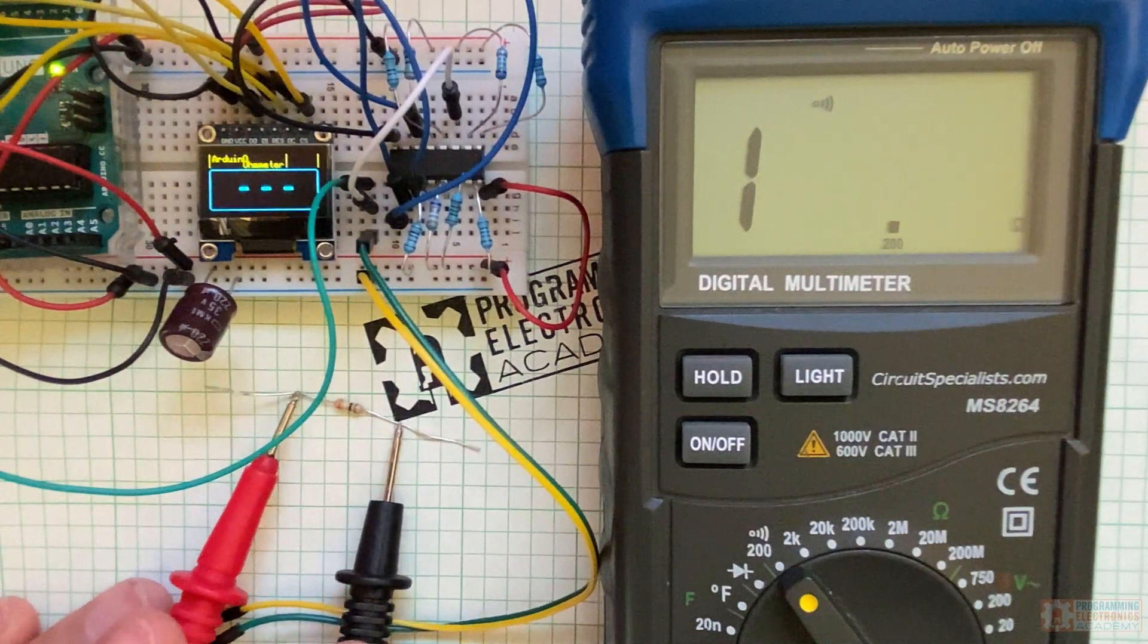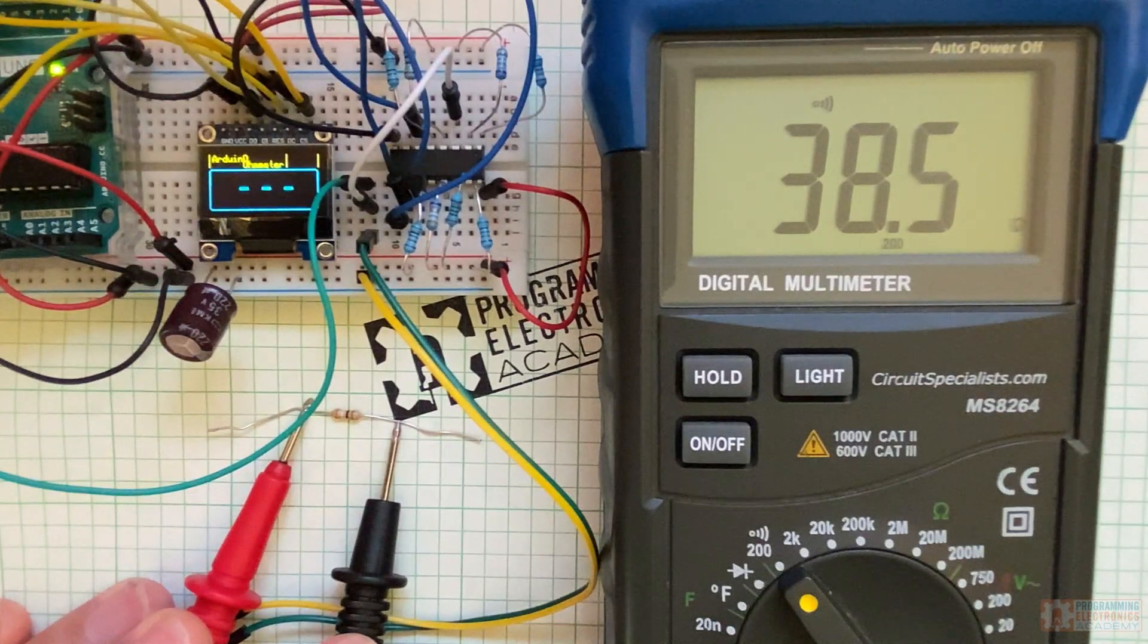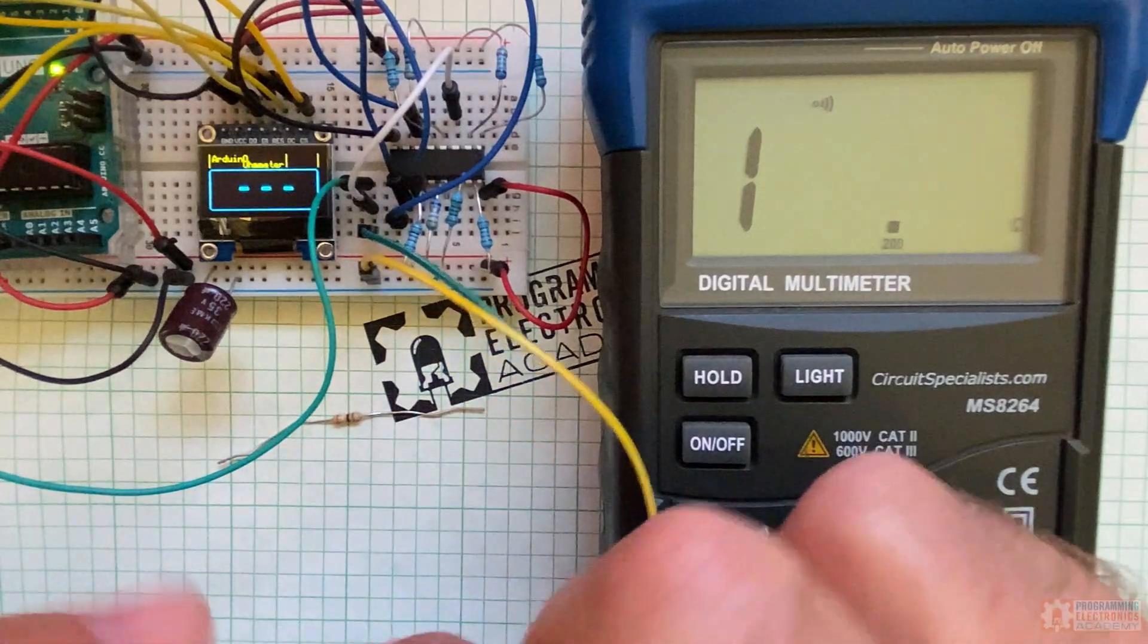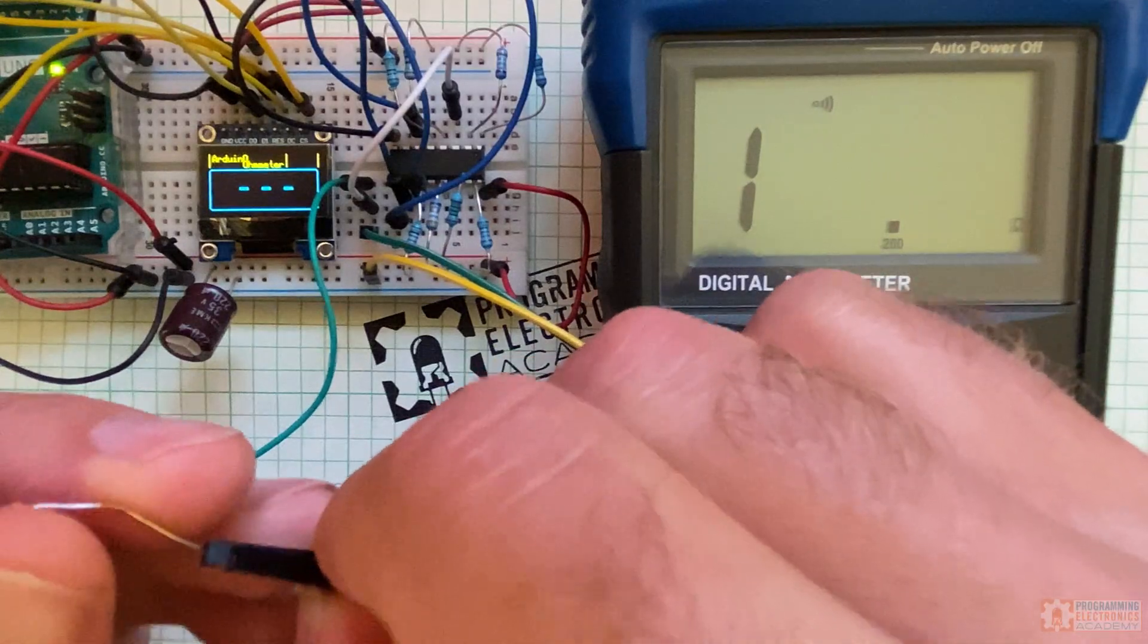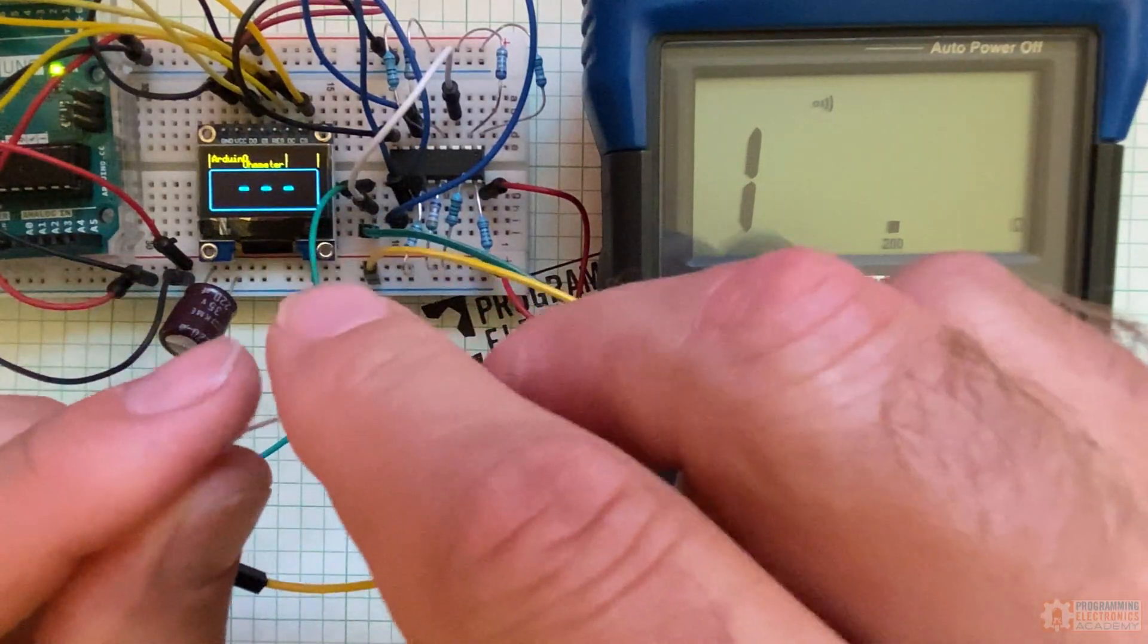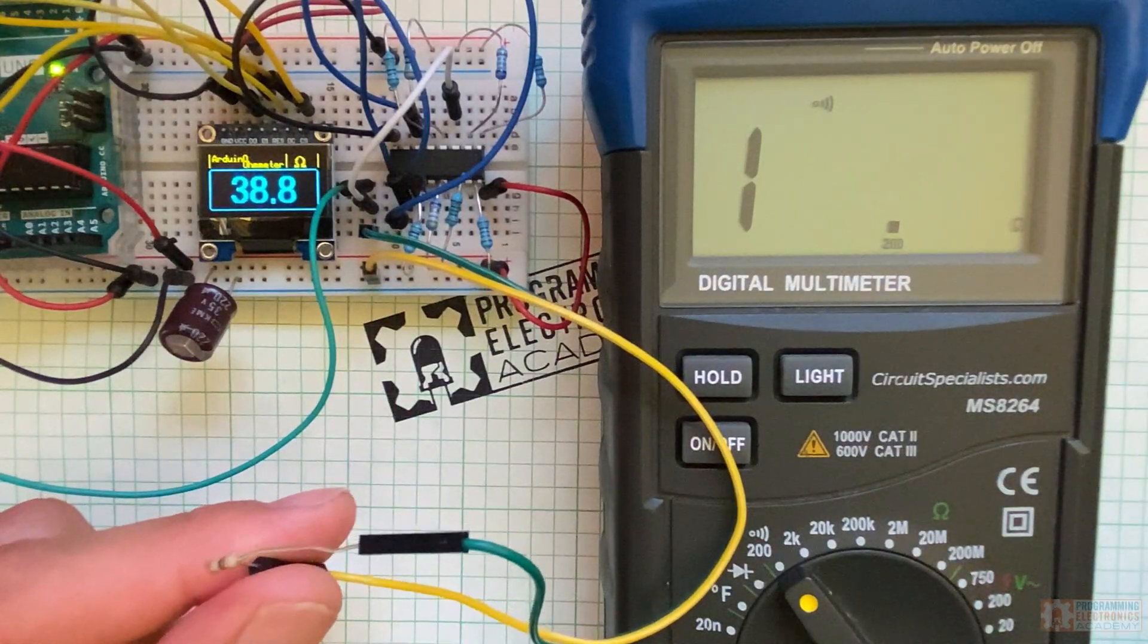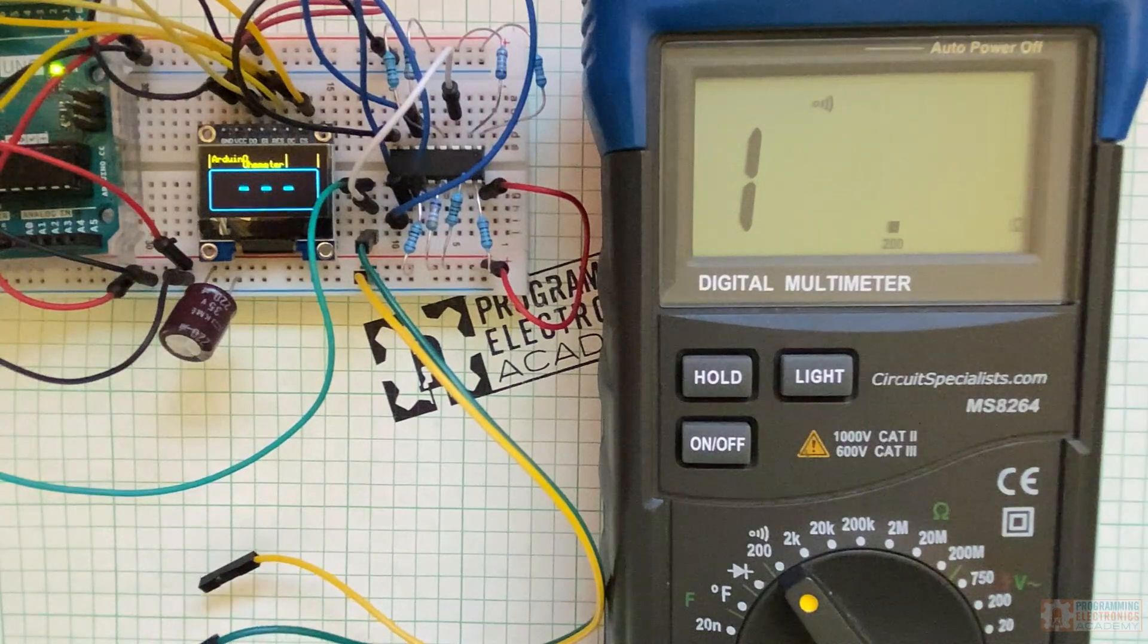And what do we get? 38.6 for this multimeter. Let's try the Arduino meter. So I've got this. This is where we hook up the leads. Go ahead and one side in here, the other side in here. Look at that. 38.8. Sweet. Pretty close.